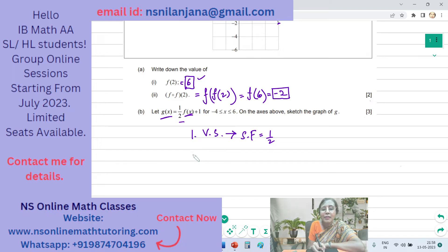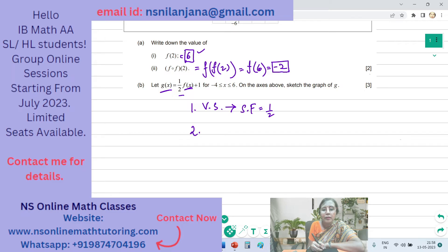And what is the second transformation? It is the vertical translation. The vertical translation and what is the translation vector? It is 0, 1. That means the graph will be translated upwards by one unit.